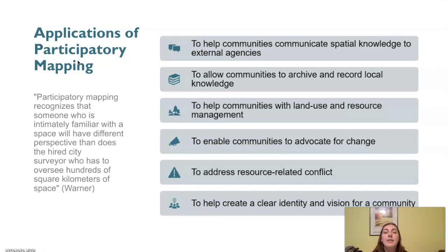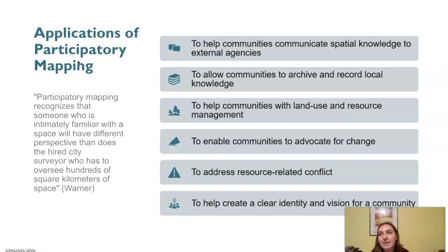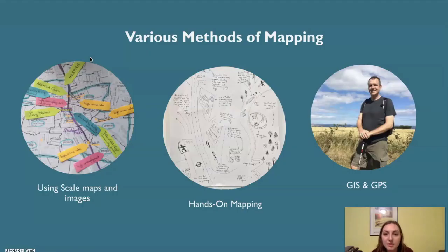Participatory mapping can also help create a clear identity and vision for the community, since when a community comes together and works towards this greater good, it's helpful. Some of the various methods of mapping include using scale maps and images, as well as hands-on mapping, and GIS and GPS.